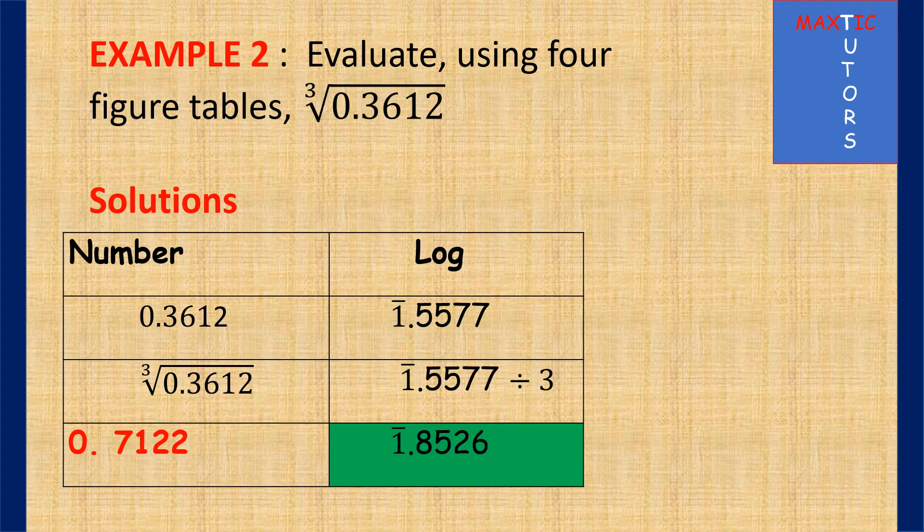Example 2. You have to find the cube root of 0.3612. So you have 1 zero here, so the characteristic is bar 1. Then 36 under 1 difference 2, that is from log reading of numbers, will give you 1.5577. Now because it is cube root, we are going to divide this log by 3.